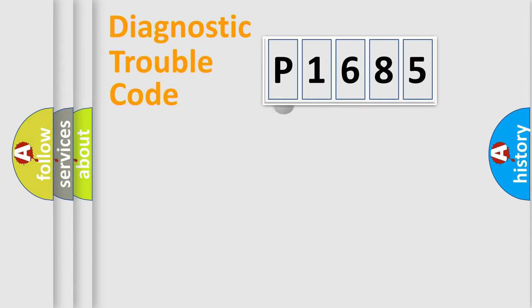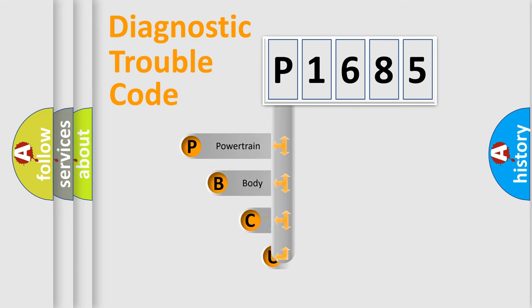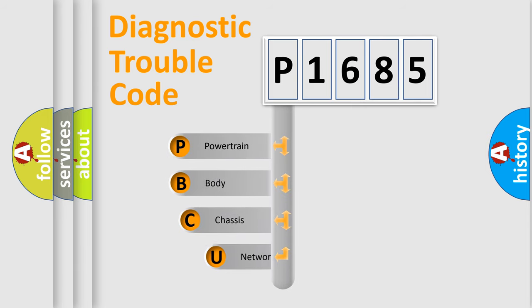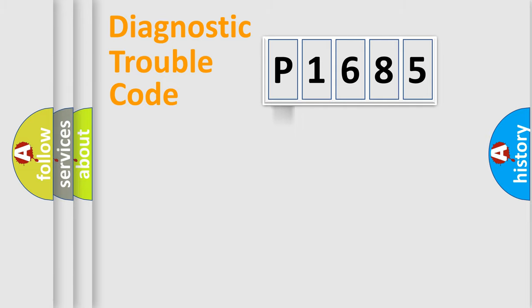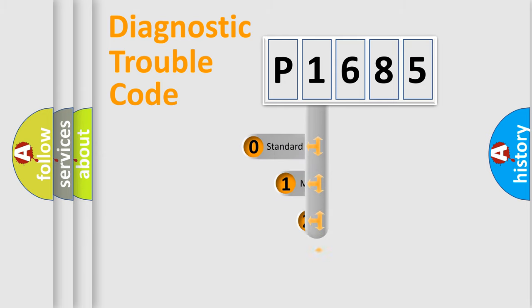First, let's look at the history of diagnostic fault code composition according to the OBD2 protocol. We divide the electric system of an automobile into four basic units: powertrain, body, chassis, and network. This distribution is defined in the first character of the code.